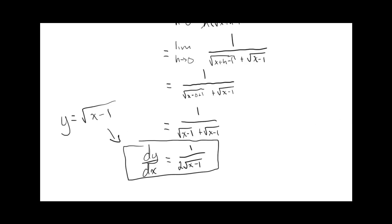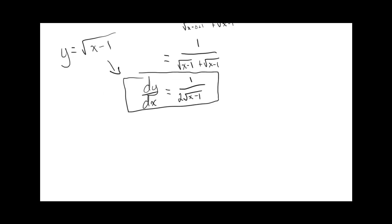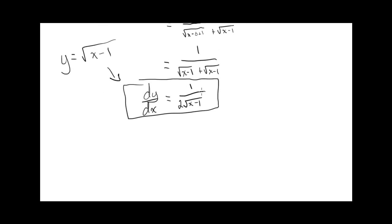The next part of the question was to find the domain of the derivative. So what's the domain of this? Well, there's two things. The bottom cannot equal 0. So root x, 2 root x minus 1 cannot equal 0. So this is for the domain.